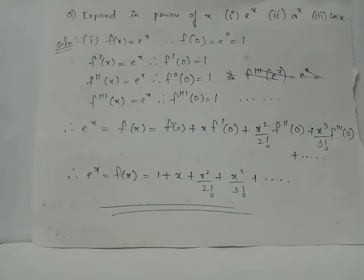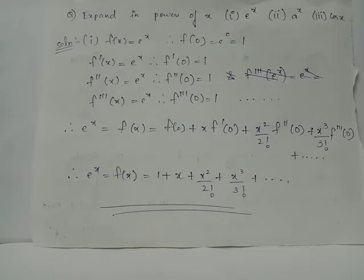We will expand functions as powers of x — the functions e^x, a^x, and cos(x). Let us take the first function f(x) = e^x. We have f(0) = e^0 = 1. The derivative f'(x) = e^x, so f'(0) = 1. Similarly, f''(x) = e^x and f'''(x) = e^x, giving f''(0) = 1 and f'''(0) = 1. We can find all higher derivatives similarly.